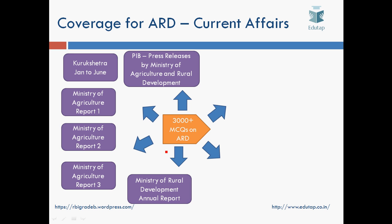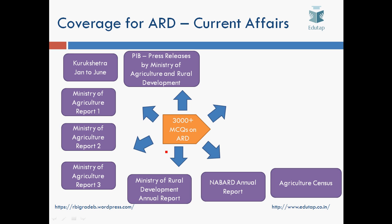There is an annual report by the Ministry of Rural Development that also becomes important because the topic itself is Agriculture and Rural Development. Here also we shall be covering more than 200 to 300 MCQs just from this Ministry of Rural Development annual report. Then the NABARD annual report is very important. For this year the report is not out yet, but it shall come soon, or otherwise you have to cover last year's report. Agriculture Census is also very, very important — there were a lot of questions asked from it last year.